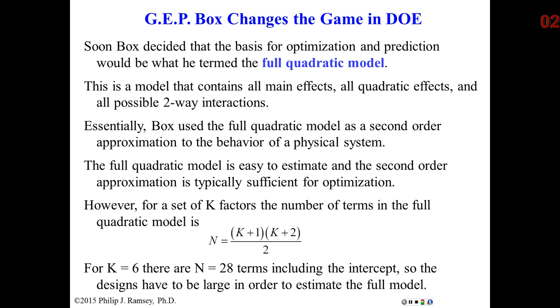Box decided that in terms of optimization and characterization, the full quadratic model would be his base model for these tasks. The model contains all main effects, all quadratic effects, and all possible two-way interactions. Essentially, what Box is saying is a second-order approximation to the behavior of the system is sufficient for optimization and characterization, and in general he's correct.